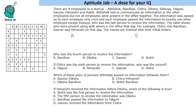For example, Chitra met Bandhan, Gaurav and Himanshi on that day — so Chitra, Bandhan, Gaurav and Himanshi were all present together. Y denotes that yes, they were present together. The names are marked with their initial letter: A means Abhishek, B means Bandhan, C means Chitra, etc. We need to find out how they passed the information.